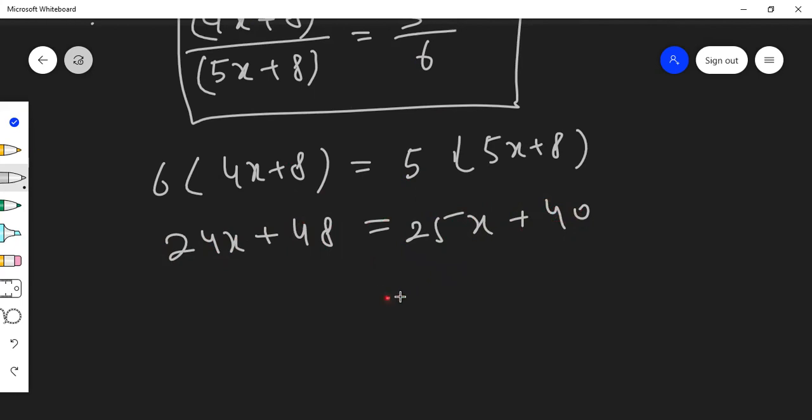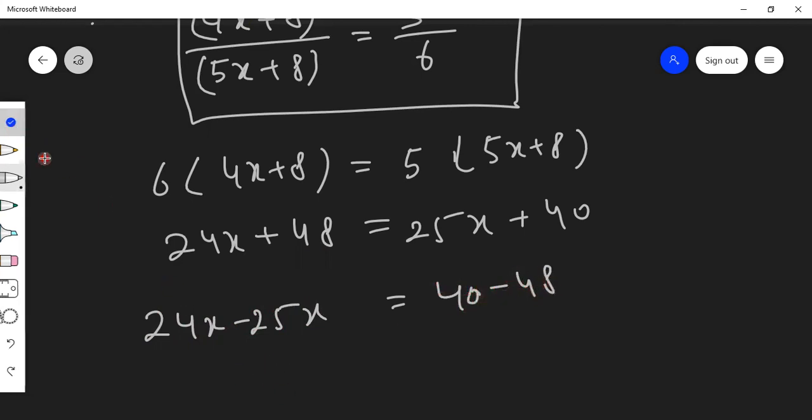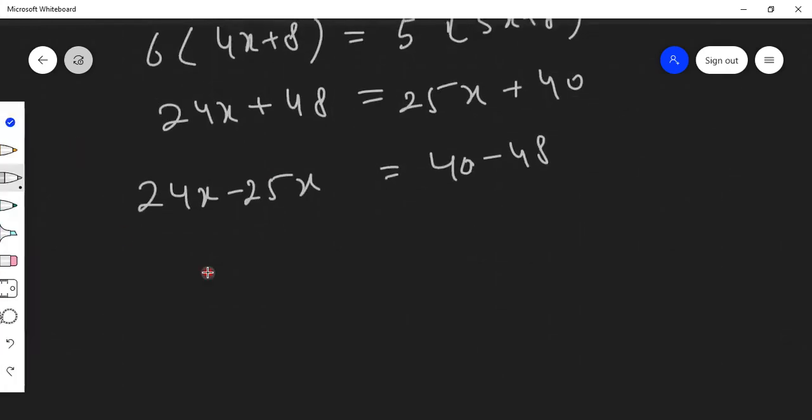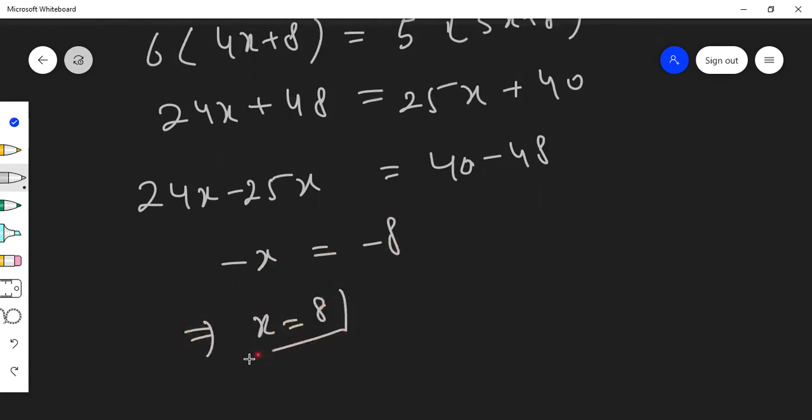So we can transpose x to one side. It's good to take x to maybe left. 24x minus 25x and we can transfer 48 to right like this, which gives us negative x is equal to negative 8, means x is equal to 8.